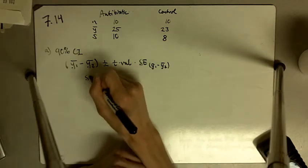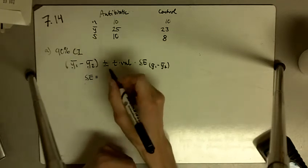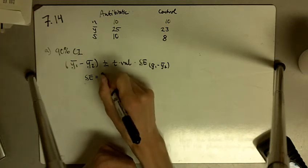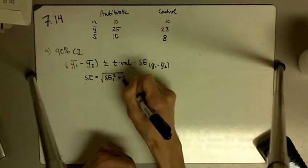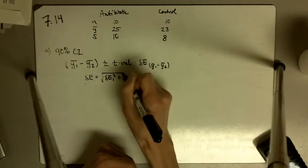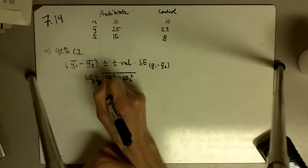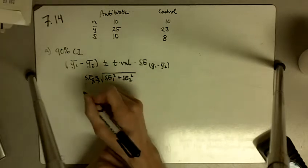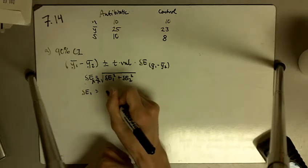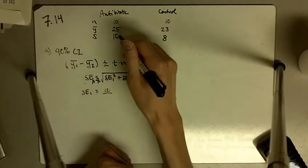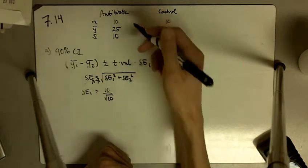To find our standard error, that is going to be the square root of standard error group 1 squared plus standard error group 2 squared — this is the standard error for ȳ₁ minus ȳ₂. Standard error for group 1 is going to be 10 divided by the square root of n, so 10 divided by the square root of 10.